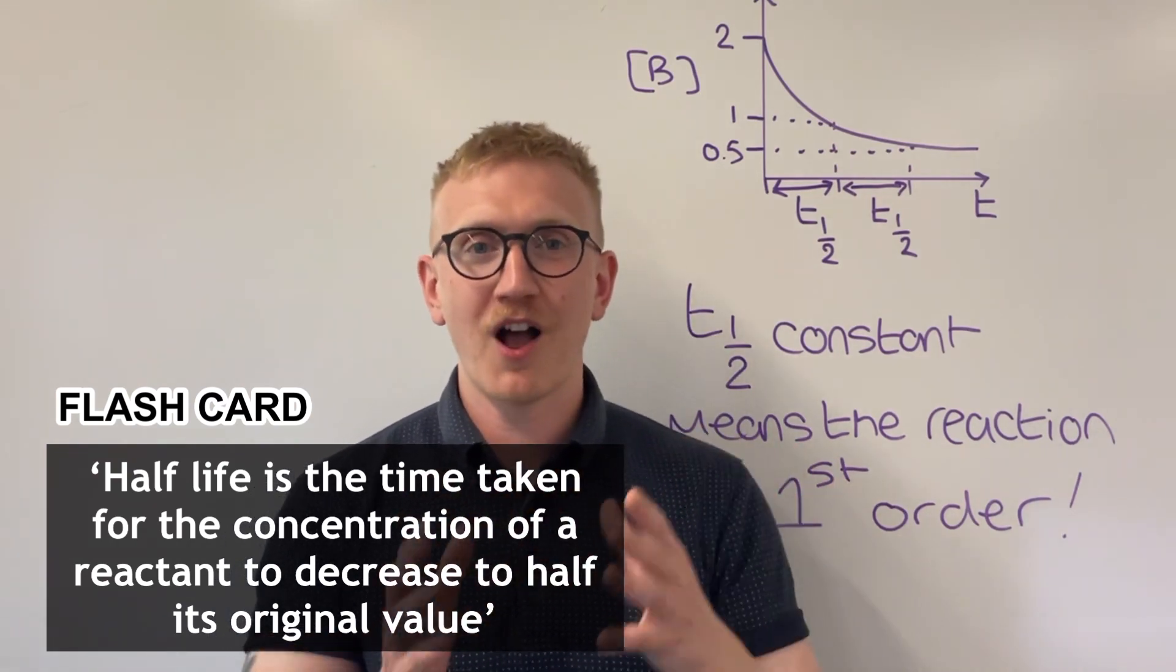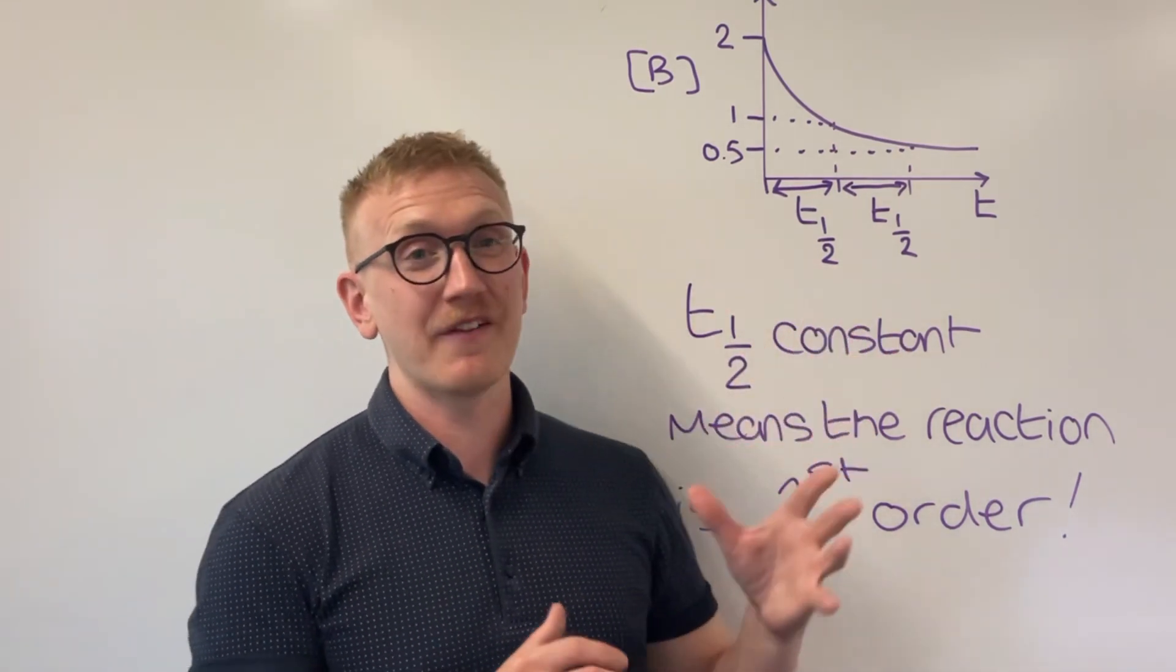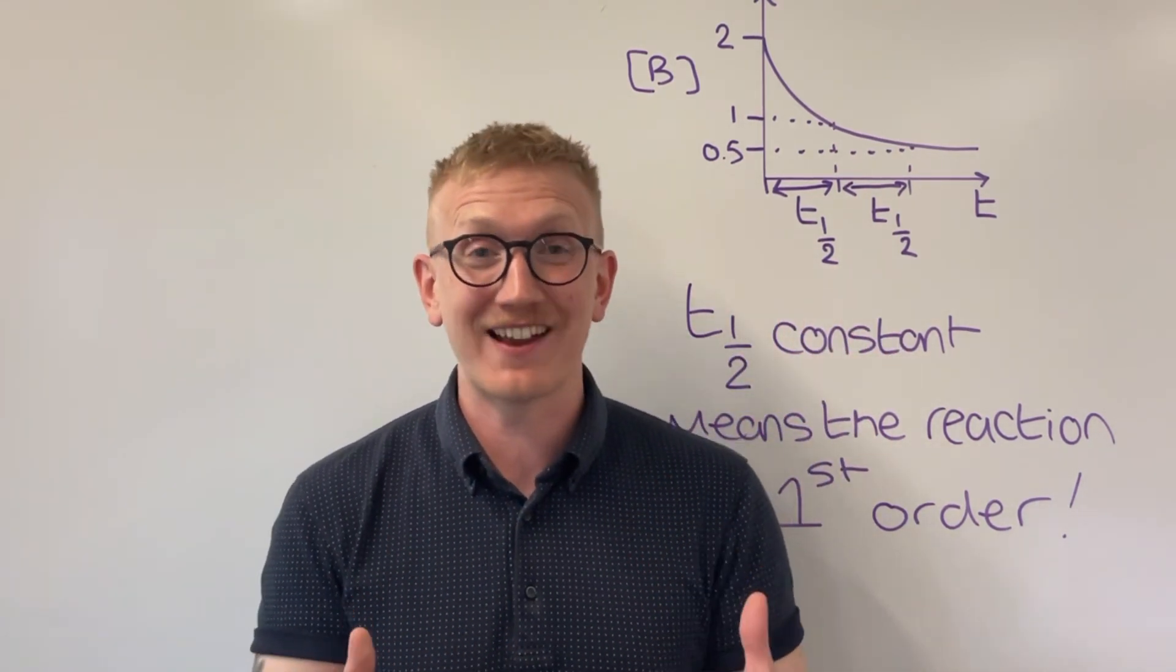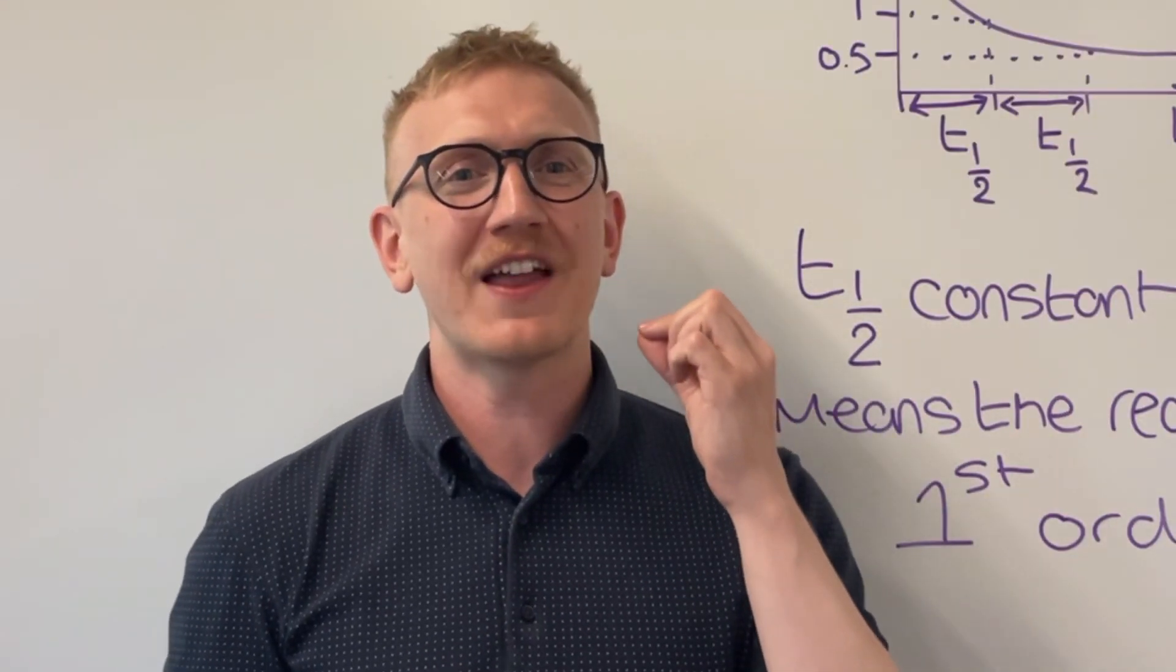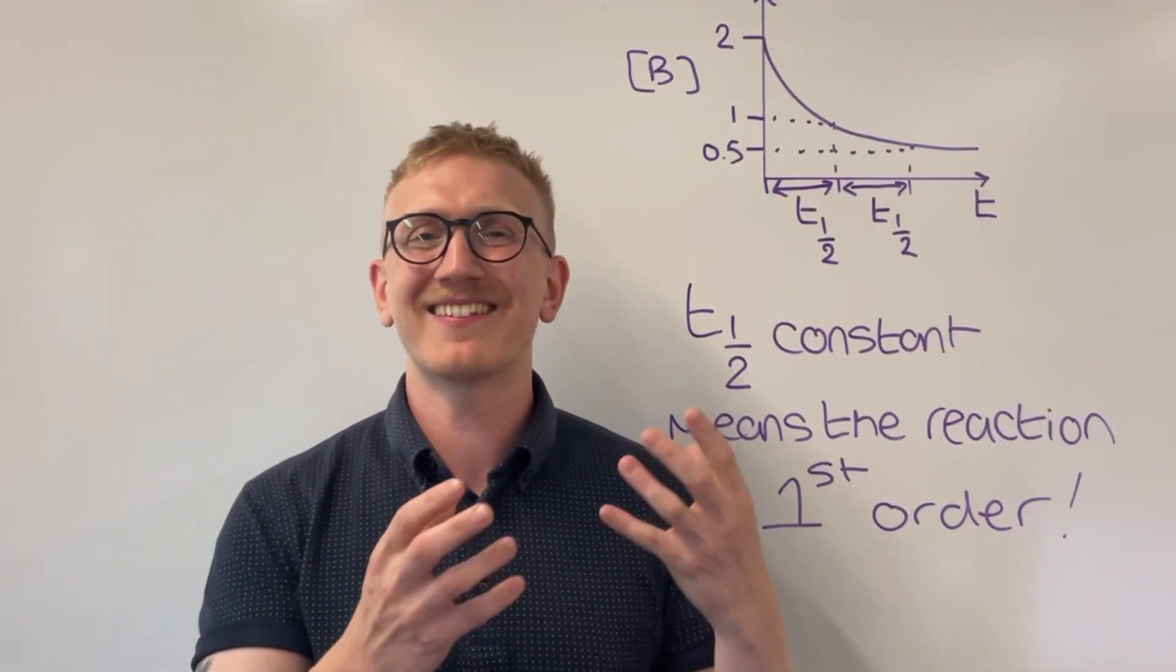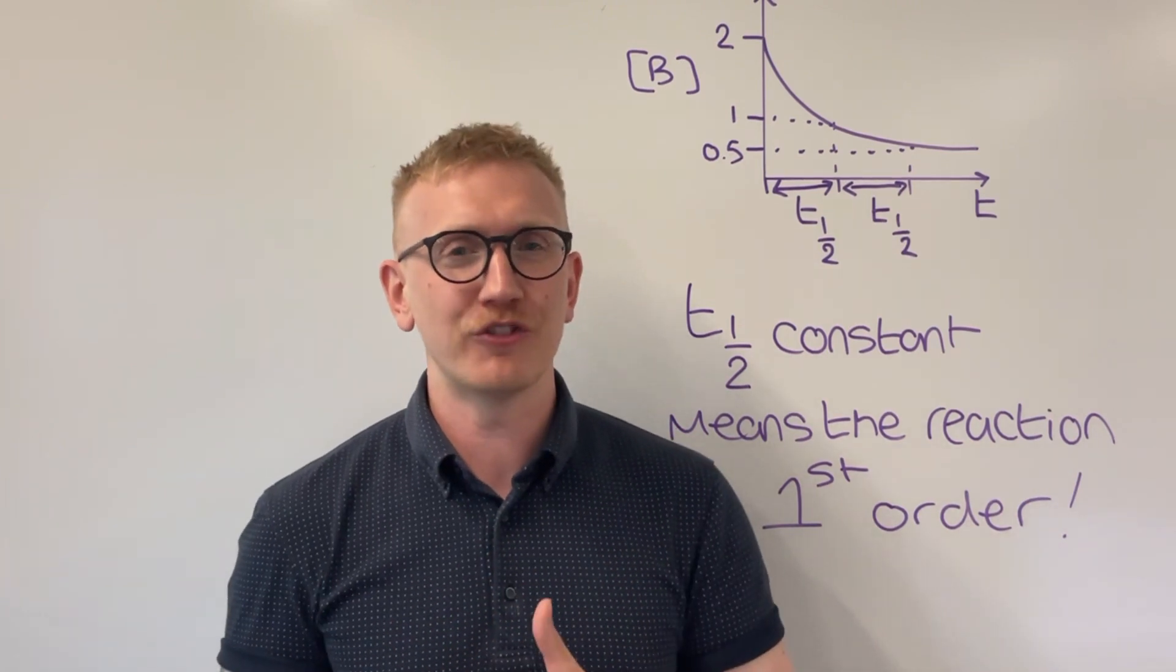Now if we were to look at two separate half-life values for the same graph, looking at the same reactant in the same reaction, and we can see that those half-life values are constant, meaning they're the same as each other, then it means we're able to make a few conclusions.